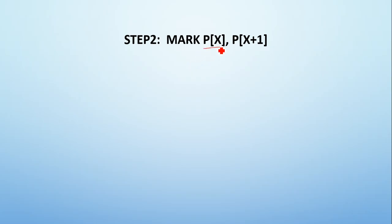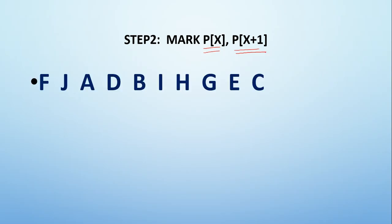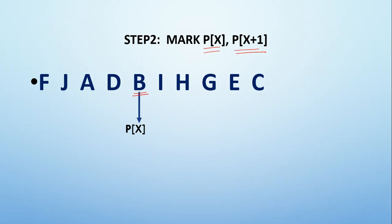In Step 2, I will be marking the pivot value P(X) and its next element P(X+1). In order to mark the pivot value, we consider the element for which Step 1 failed — that was B. Since the condition failed at element B, B will be considered as the pivot value P(X), and its next element, I, will be considered as P(X+1).